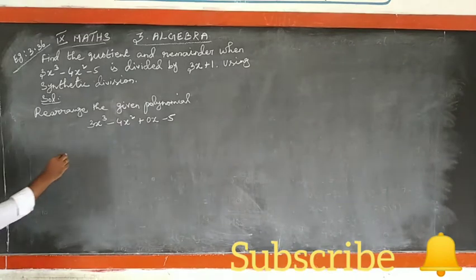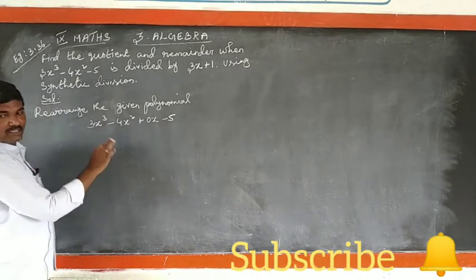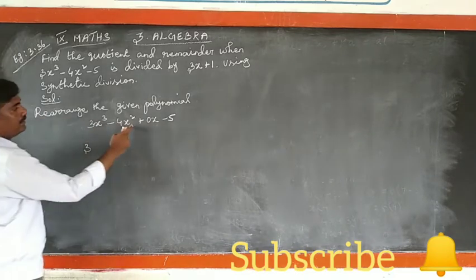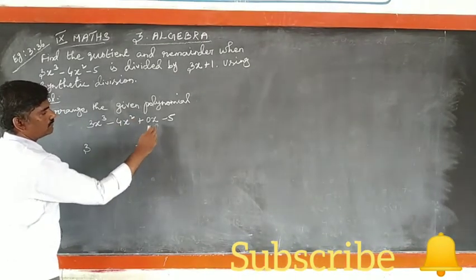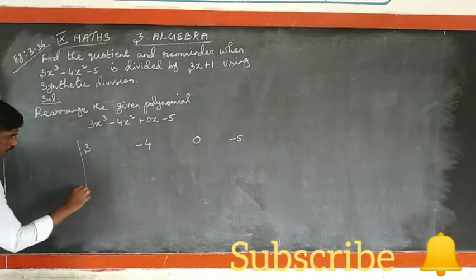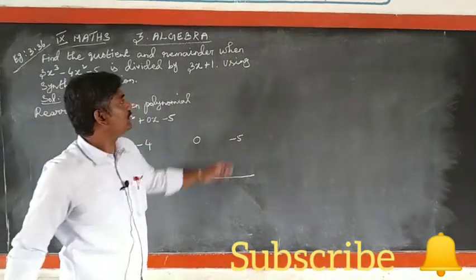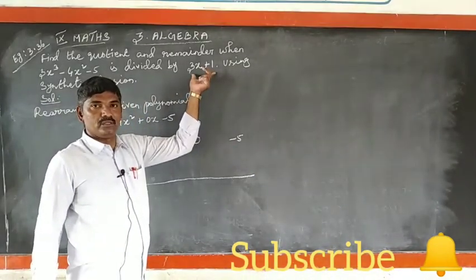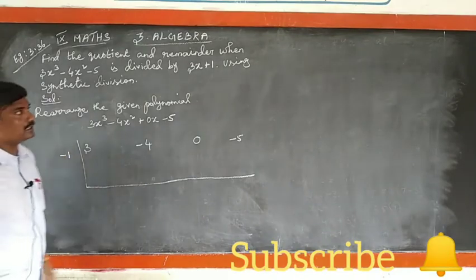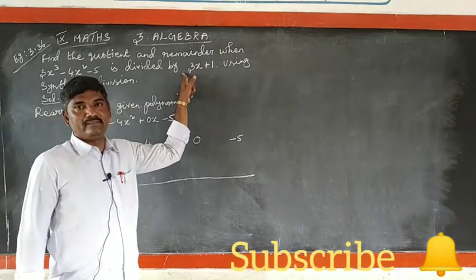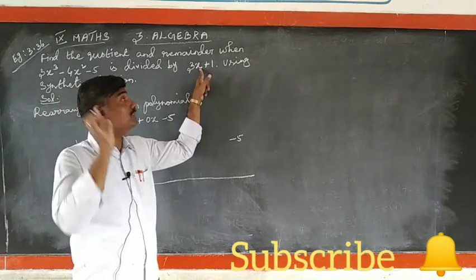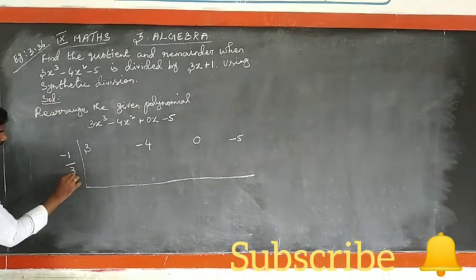Now we will write it out for synthetic division. We write the coefficients: x³ coefficient is 3, x² coefficient is minus 4, x coefficient is 0, and the constant term is minus 5. Then we have 3x plus 1 as the divisor. We divide by 3.